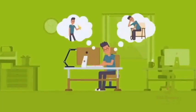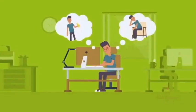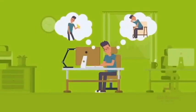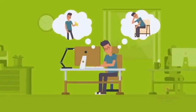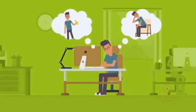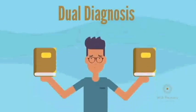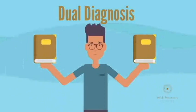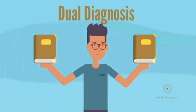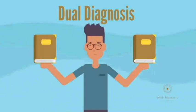Inadequate management of the two as co-occurring conditions can make it difficult for a person to function at work, at home, at school, and within their interpersonal relationships. Therefore, a dual diagnosis requires an integrated approach comprising intervention and treatments for two different primary conditions.